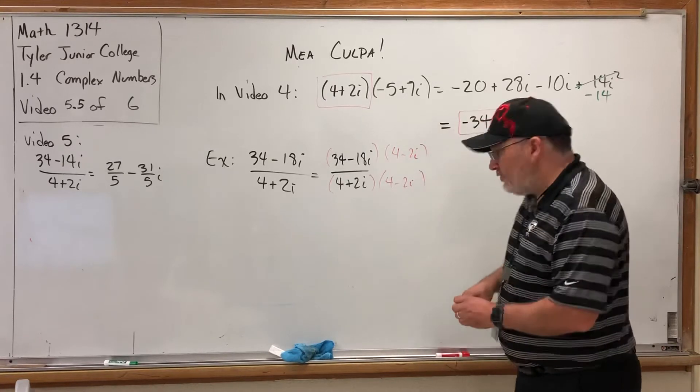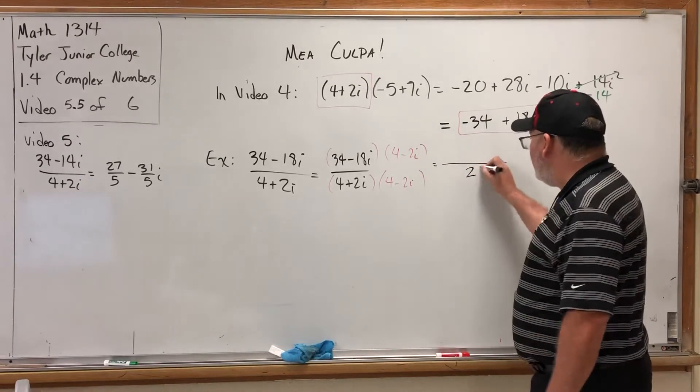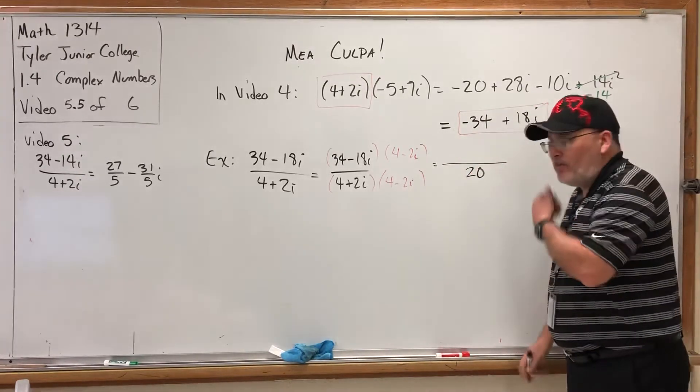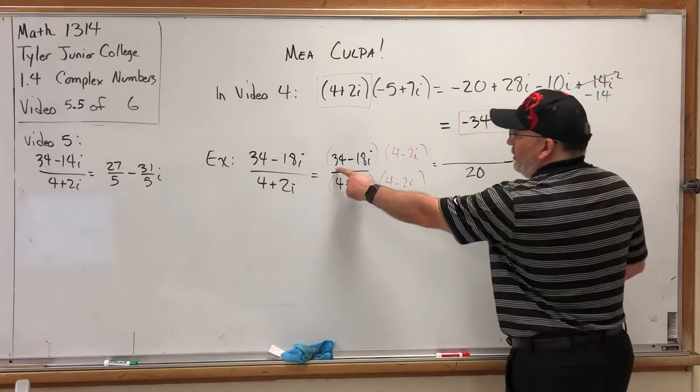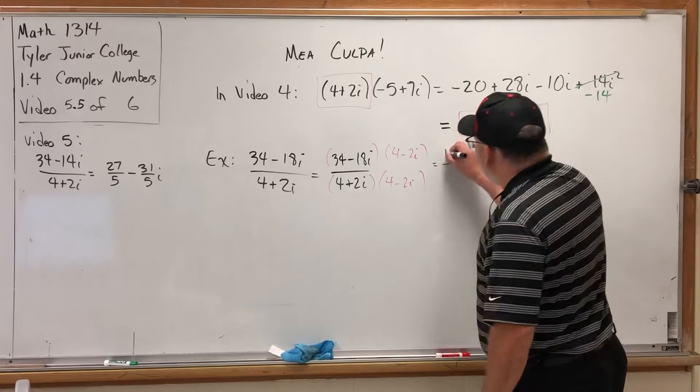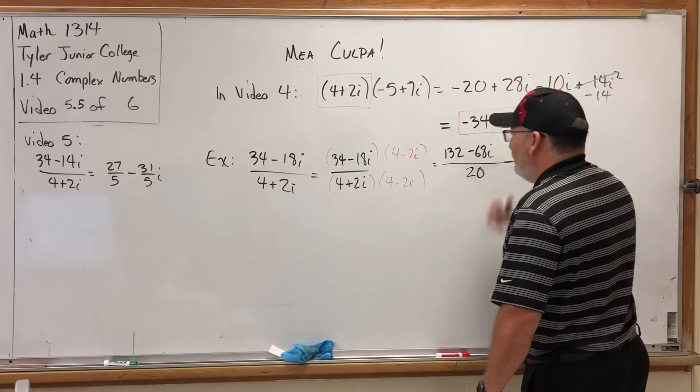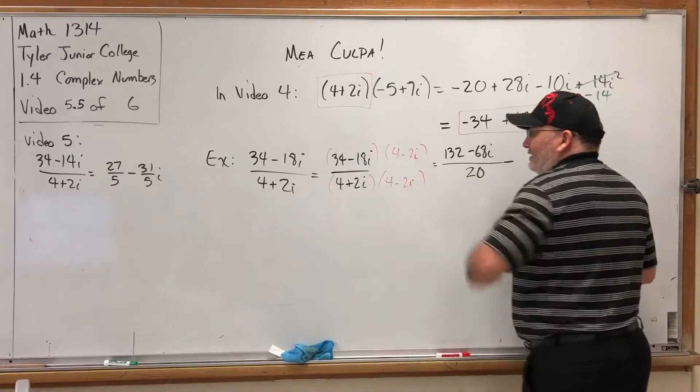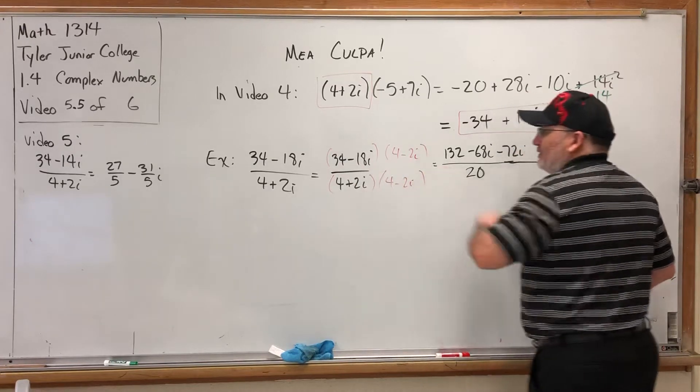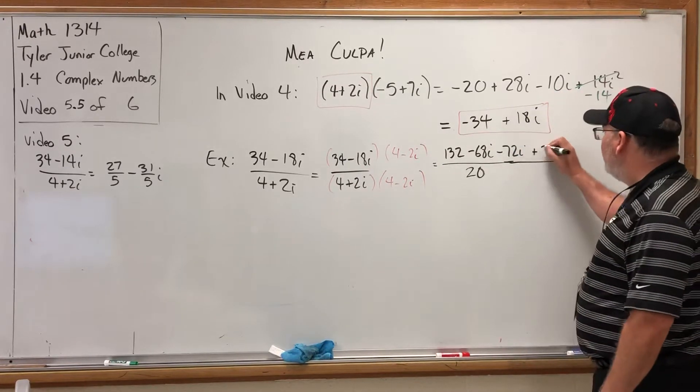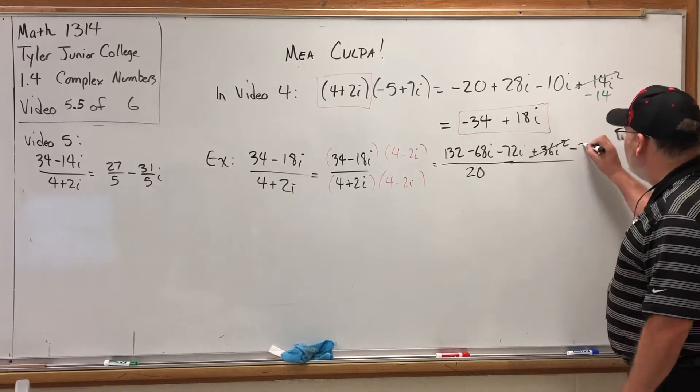Now in the previous video, this is the same FOIL problem we had before and it ended up being 20, so that's not going to change. What will change is the numerator. So allow me to go through this one a little bit more quickly. 34 times 4 is 132, 34 times -2i is -68i, -18i times 4 is -72i, and then -18i times -2i is +36i², except the i² becomes -1, which changes this to -36.